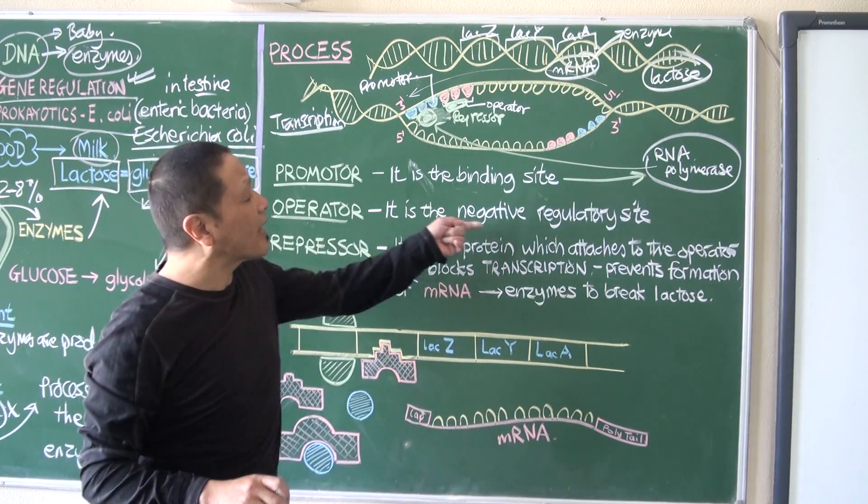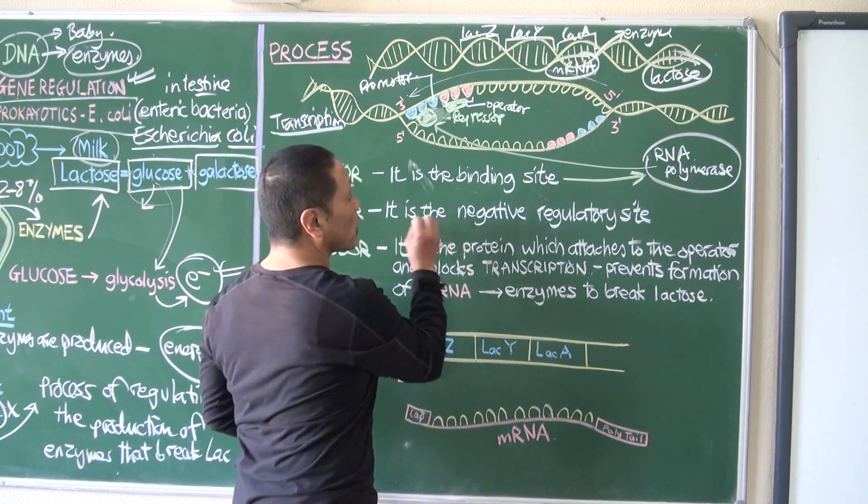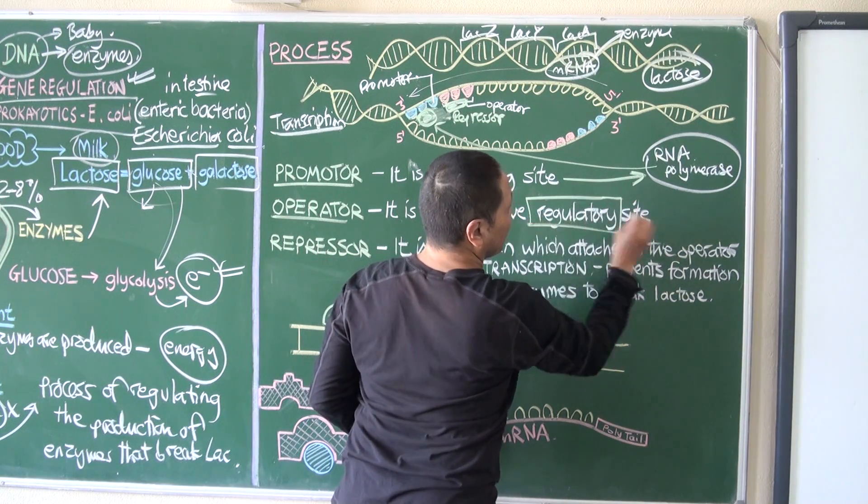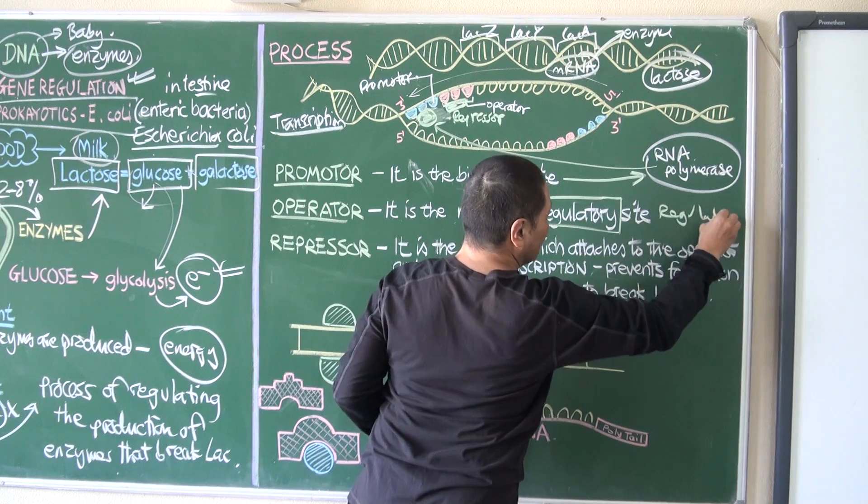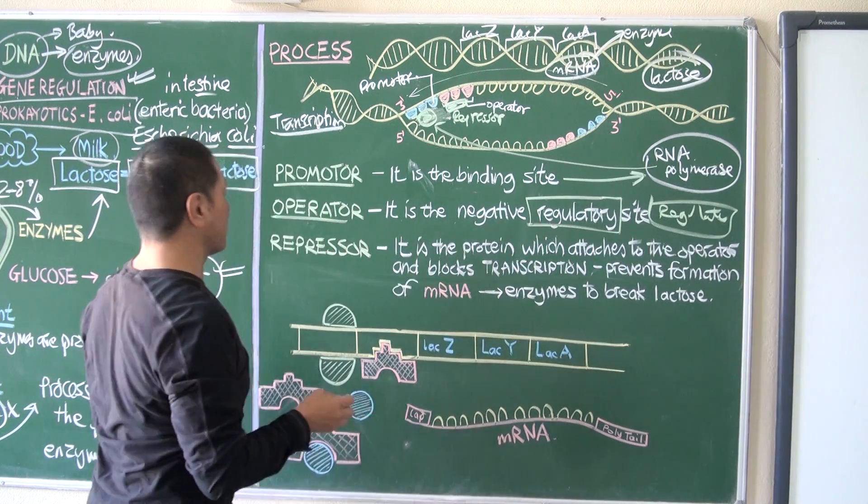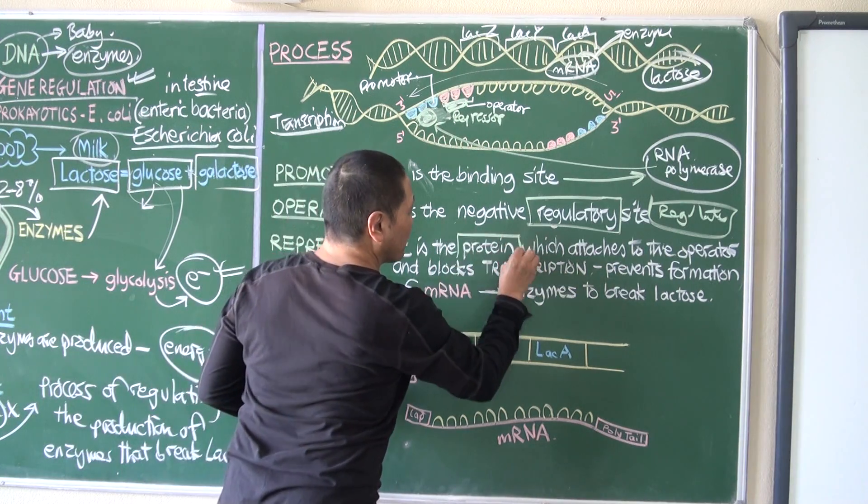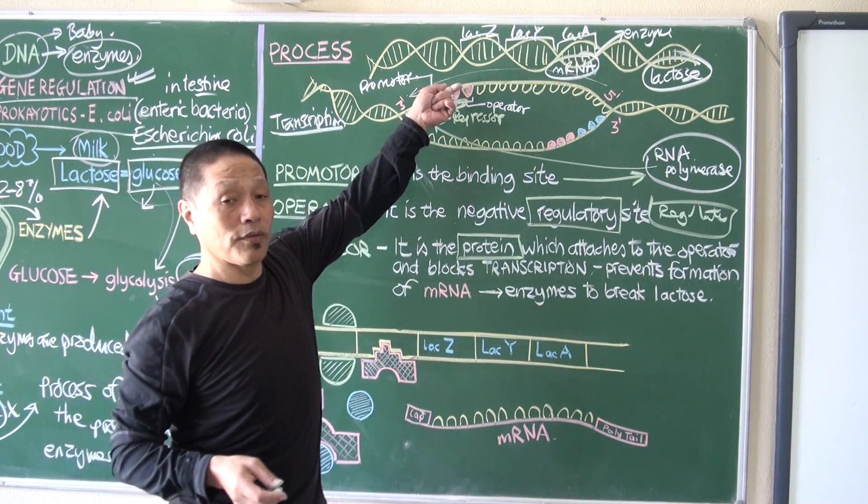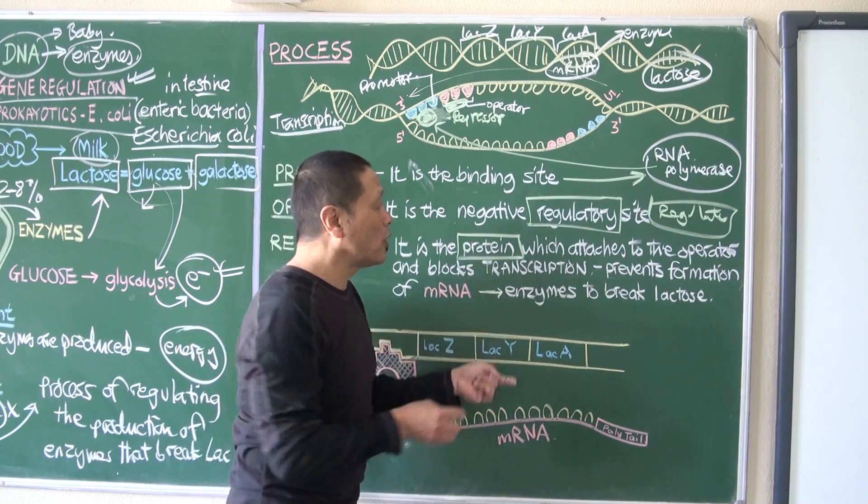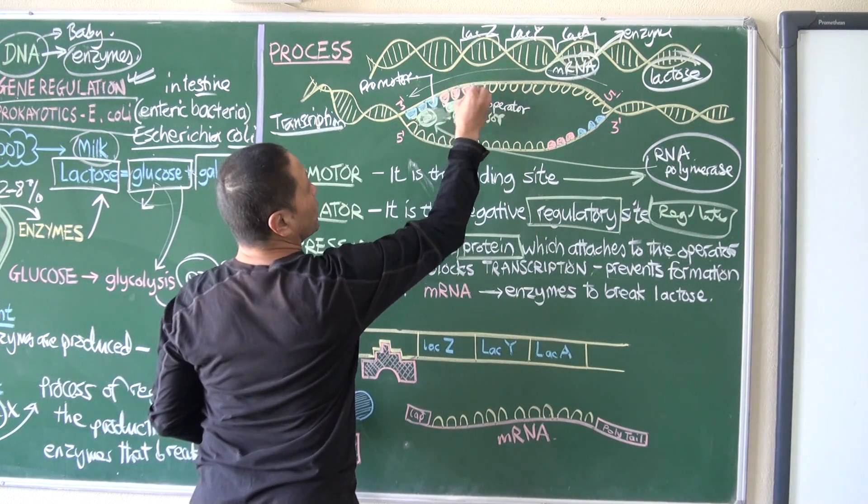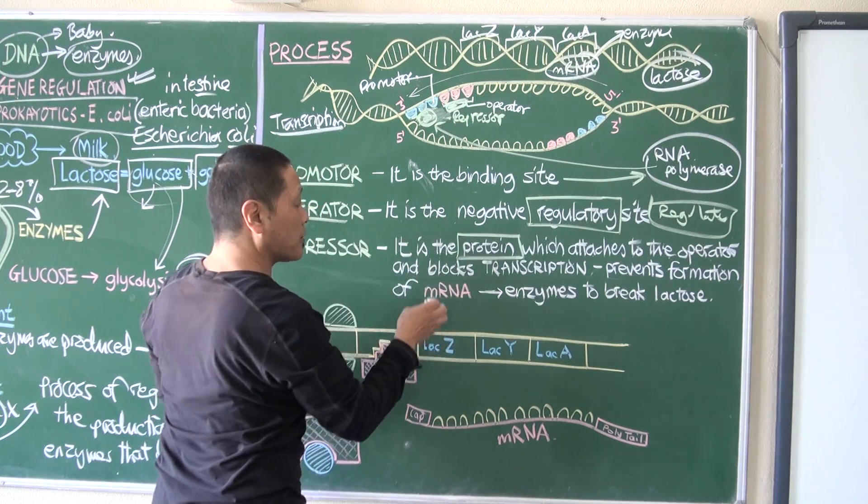This is the one which actually regulates production of enzymes. Then repressor: it is a protein, it's an enzyme, it's not a DNA code, it's not nucleotide, it's an enzyme which attaches to the operator.